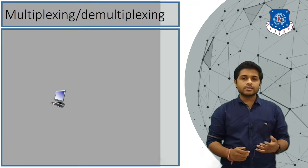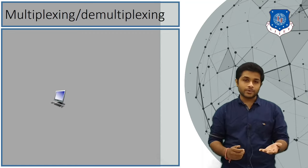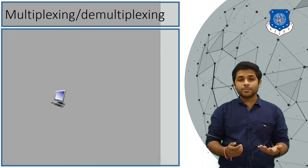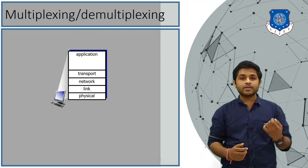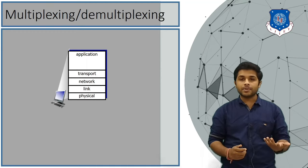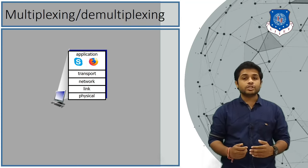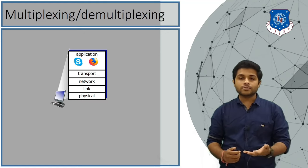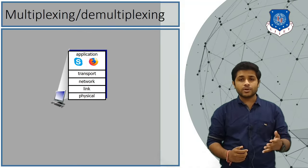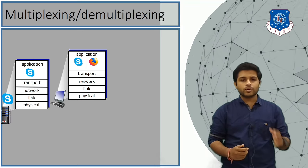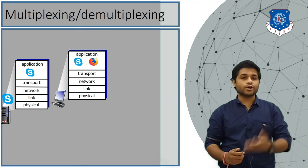We will try to understand this topic with an example. The device you see on the screen is your computer. Every computer has five layers — the TCP/IP layers — which are physical layer, data link layer, network, transport, and the application layer. Suppose you have opened two applications in the application layer: Skype and the Firefox browser. Skype has a server that is far away from you, and that server also has the same five layers as your device.